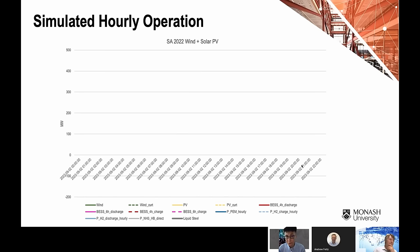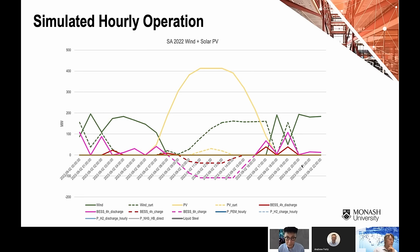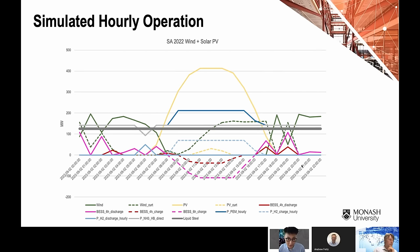Let's dive deeper into how this system operates hour by hour in an average day to meet the constant production goal. One curve shows energy output from wind and solar, along with spontaneous curtailment from the renewable generation plant. This is combined with the four-hour battery storage system charging and discharging, hydrogen produced from electrolysis for iron reduction, hydrogen storage from tank or geological storage charging and discharging, and finally the green steel production curve at a constant rate.